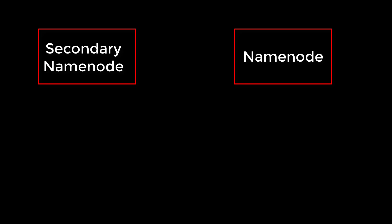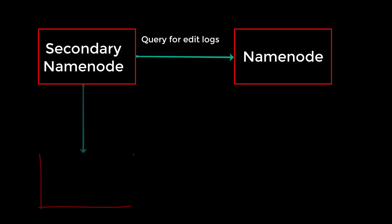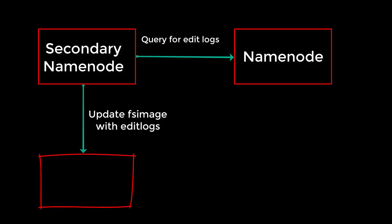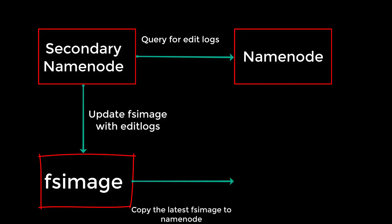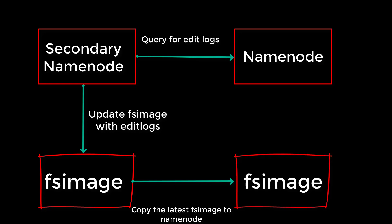The secondary name node performs the checkpoint by loading the latest FSimage, applying the edit files to it, and generating the latest in-memory structure in its own memory. From that, it creates a new FSimage — the latest and up-to-date one — and sends it back to the name node. The name node then has an almost current FSimage and starts writing into a new edits file.